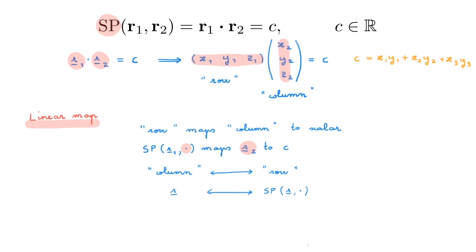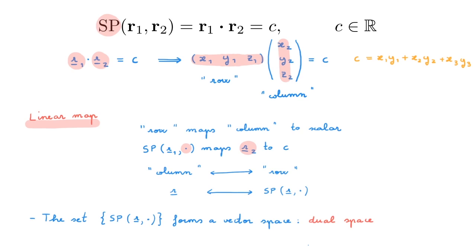The linear maps themselves form a collection of objects, and in fact it can be shown that the set of all linear maps forms itself a vector space — by confirming that these elements obey vector addition and scalar multiplication. The dual space is simply the vector space made of the linear maps that act on the original vector space. All you have to remember is that for every column vector there is a corresponding row vector, and that combination gives you the scalar product.